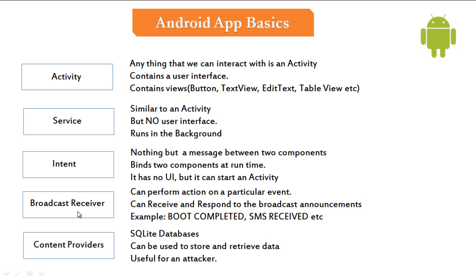The next one is broadcast receiver. This is one more important component for developers as well as hackers. It can perform some action on a particular event. For example, if I want to do something with my application when the user receives an SMS, or when the user boots his mobile phone, we need to use a broadcast receiver. It can receive and respond to broadcast announcements — examples are boot completed, SMS received, or charger connected.